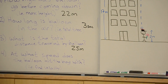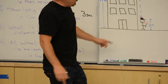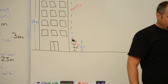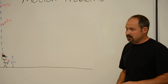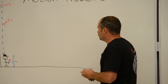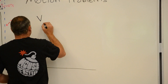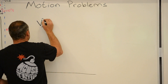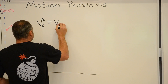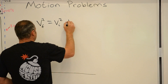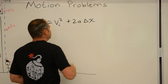Now let's find the speed at which it smacks the boyfriend in the head, and I'm going to show you two different ways to do this. First way, let's use this equation and plug and chug: v squared equals the initial squared plus 2a delta x.